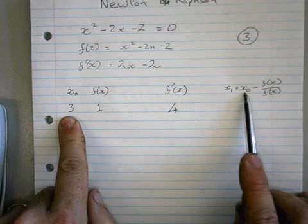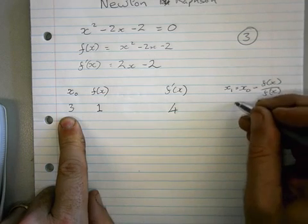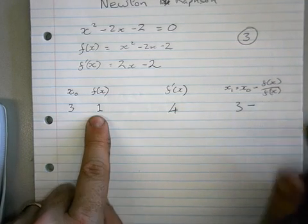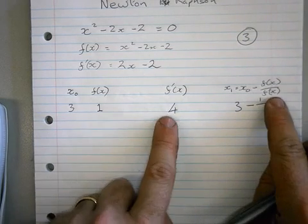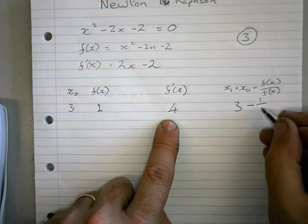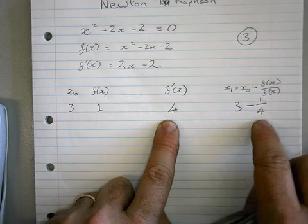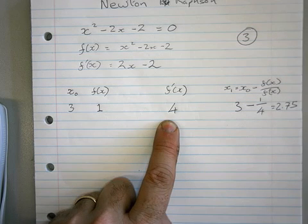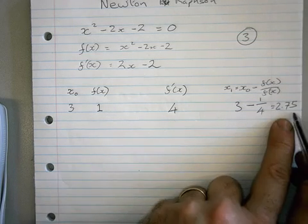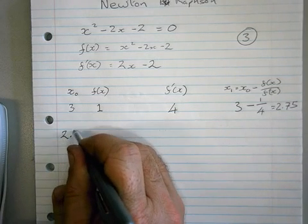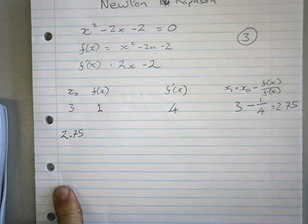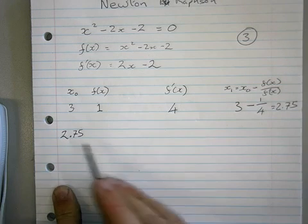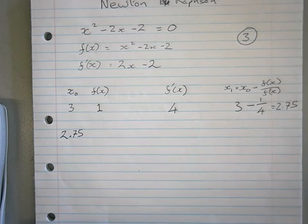Now watch how this works. x0 is 3, isn't it? 3 take away f(x) is 1 over f'(x) is 4. 3 take away 1 quarter is 2.75. You can do it on any calculator. That is now this number here. And I have now completed one cycle of Newton-Raphson. The 3 I gave to you to start with. The start number you'll be given.